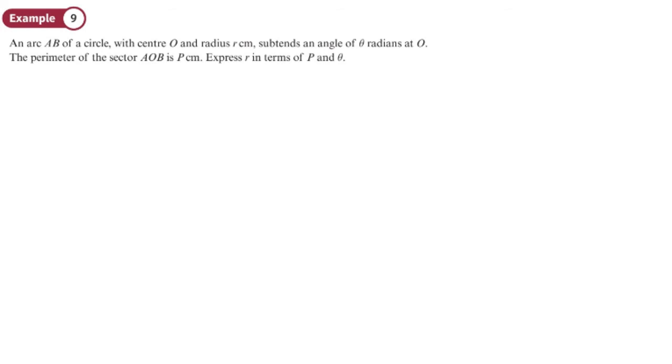Next one. Arc AB of a circle with center O. Let's start drawing this. So the arc is this bit AB and the center is O, radius R, subtends an angle of theta radians at the center. The perimeter of this sector is P. Express R in terms of P and theta.